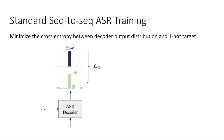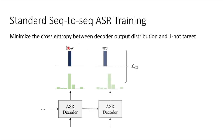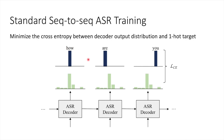Let's look at standard sequence-to-sequence ASR training. For each time step, the ASR decoder outputs a distribution over the vocabulary. For example, if the target word at a given time step is 'how,' we minimize the cross-entropy between the decoder output distribution and the one-hot representation of the word 'how.' This goes on for each time step to train the ASR.